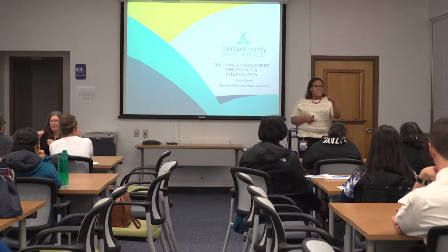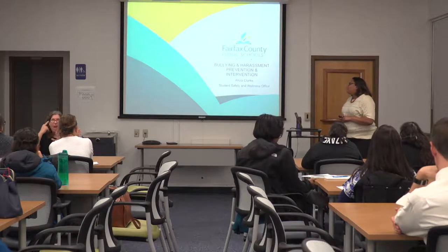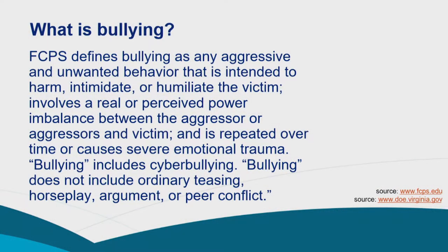So quick question: what is your definition of bullying? Highly aggressive behavior that's repeated over time, that involves an imbalance of power intended to harm, intimidate, or humiliate another person. That definition is pretty much what we in FCPS use, and it's also the definition the state of Virginia's Department of Education uses. When we address bullying, we look for the intent to cause harm, the power imbalance, and that it is repeated over time.